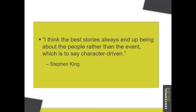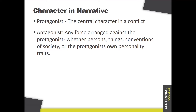Stephen King: 'I think the best stories always end up being about the people rather than the event' — which is to say, a character-driven story. So what are the different types of characters involved in a story? The protagonist is the central character in the conflict — the character that the story is typically following. And standing in the protagonist's way is an array of forces: it could be another character, a person, the environment, culture. Any of these forces arrayed against the protagonist is called the antagonist, based on whatever conflict.